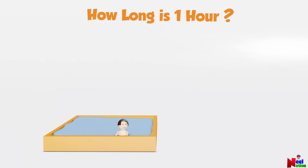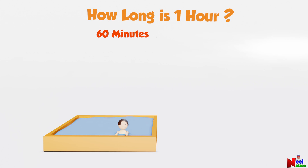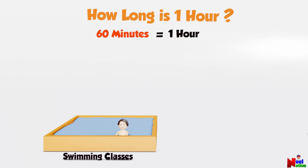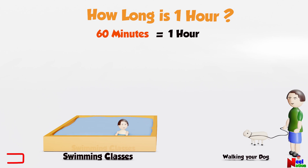How long is an hour? 60 minutes make one hour. Your swimming lessons could take an hour, or walking your dog could take an hour.